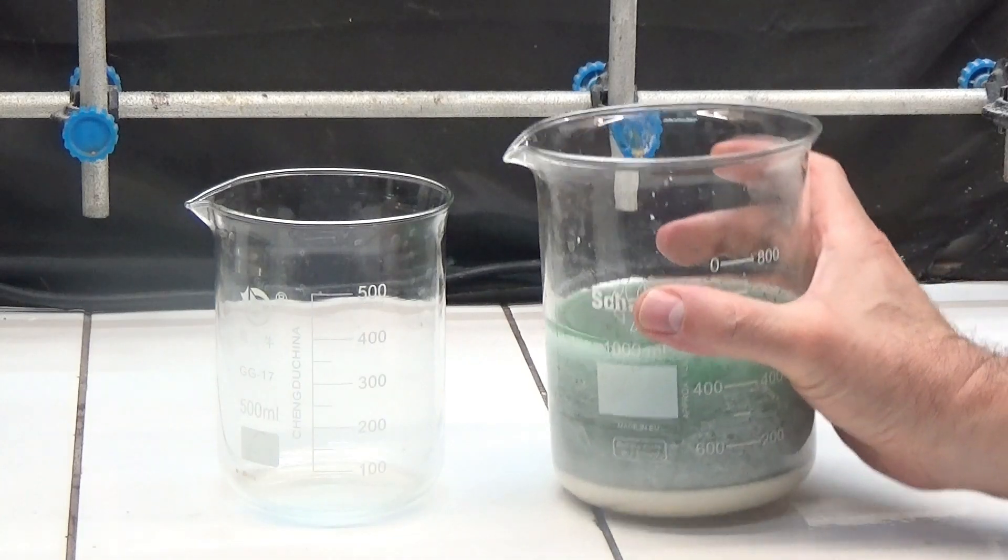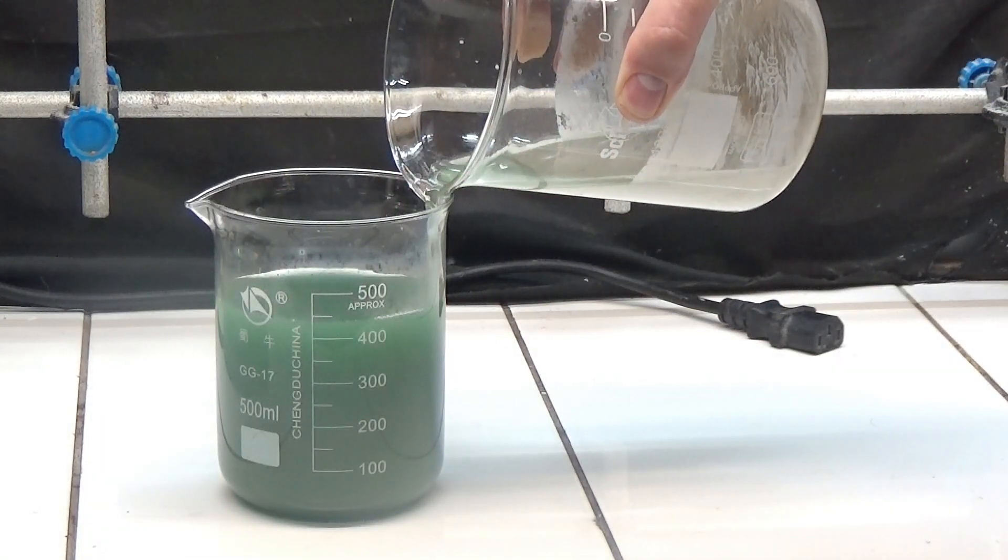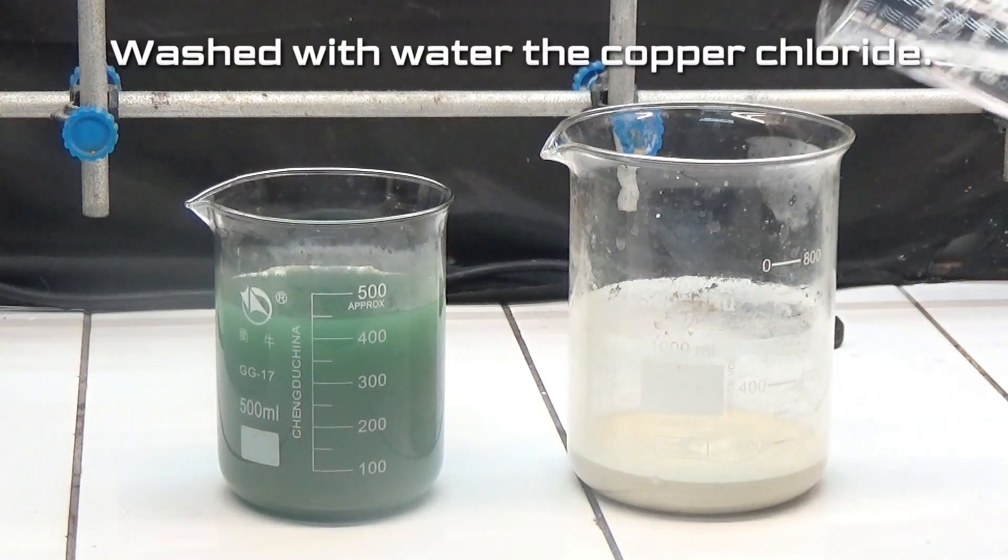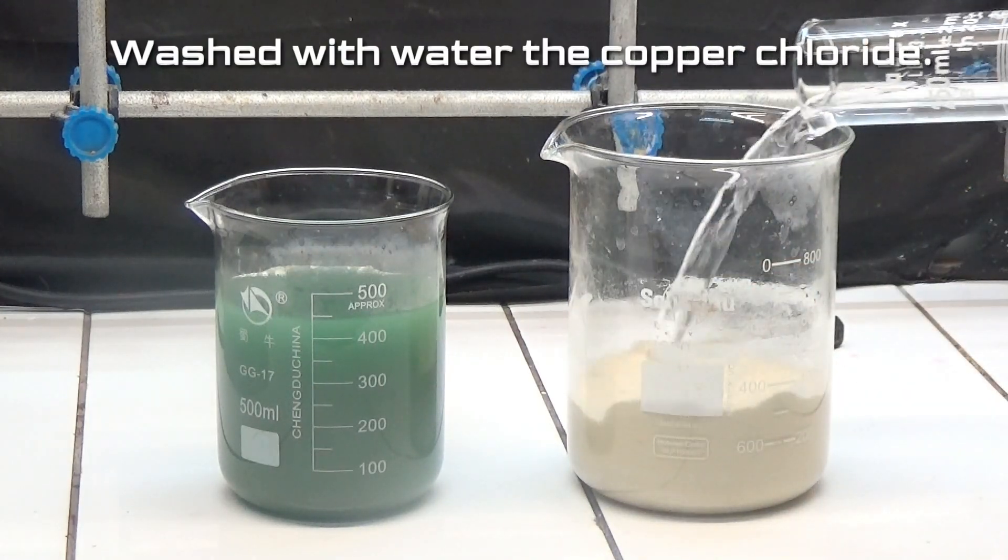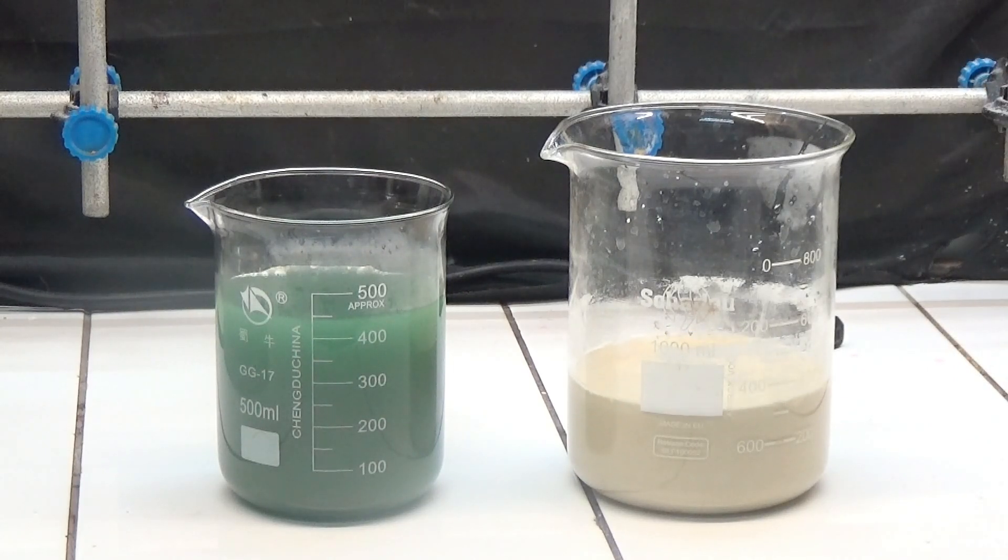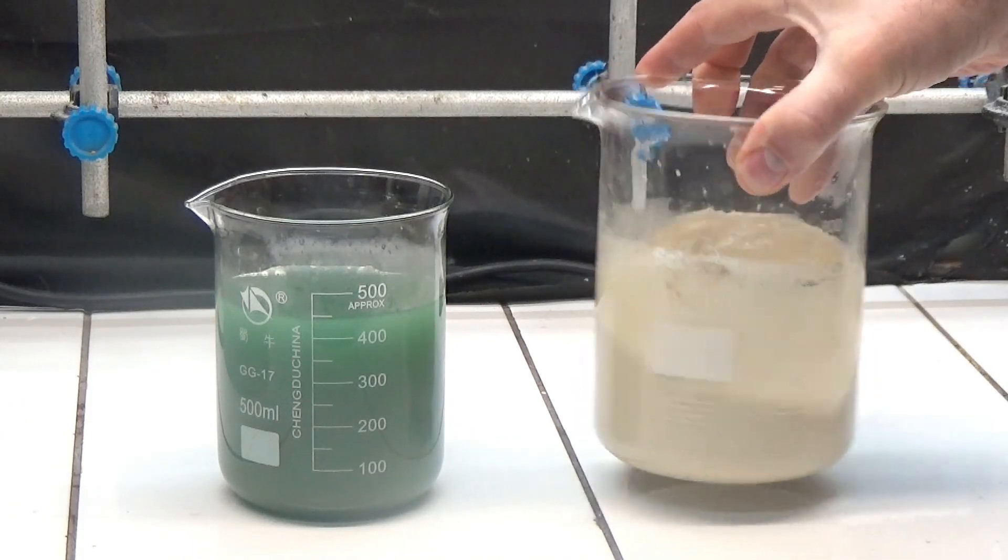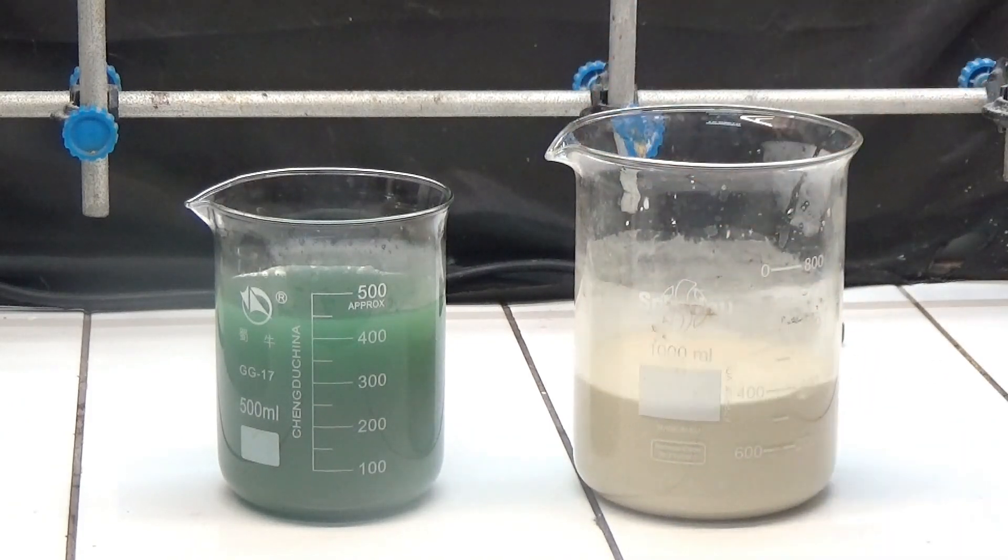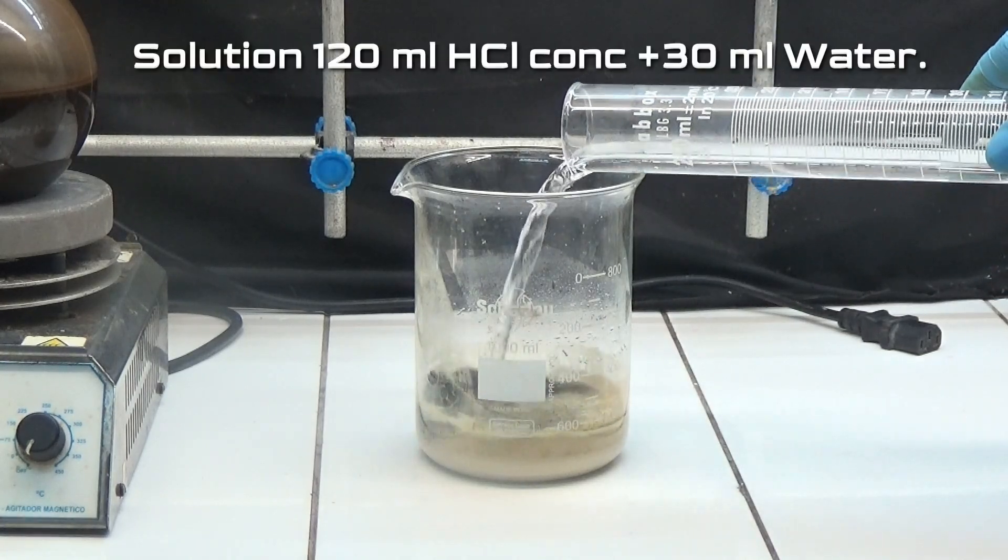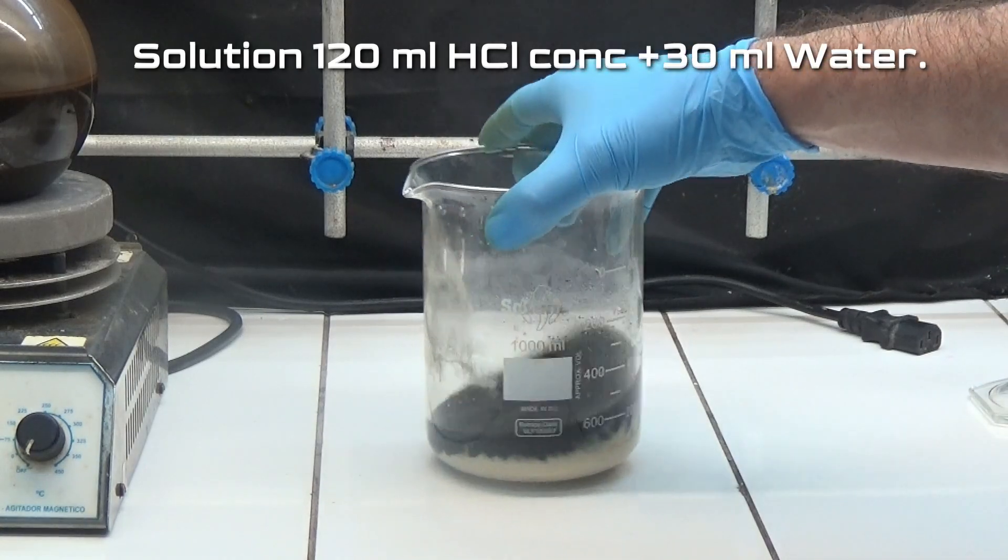We allow to decant. We eliminate the liquid above and wash with water the copper chloride. We decant again, eliminating the liquid with precaution. We dilute the precipitate in a solution of 120 milliliters of concentrated hydrochloric acid diluted in 30 milliliters of water.